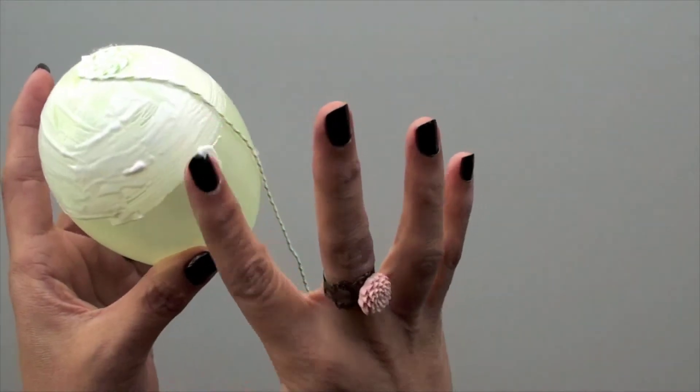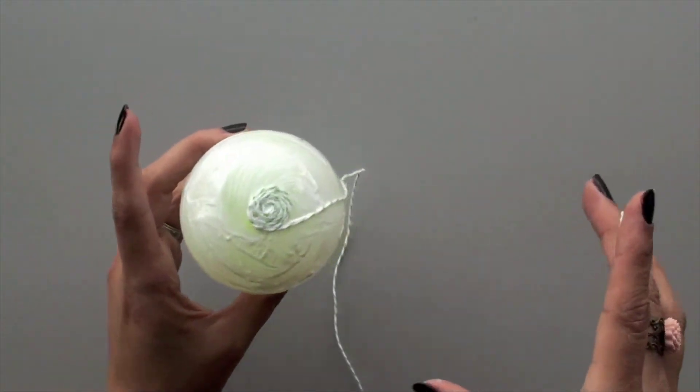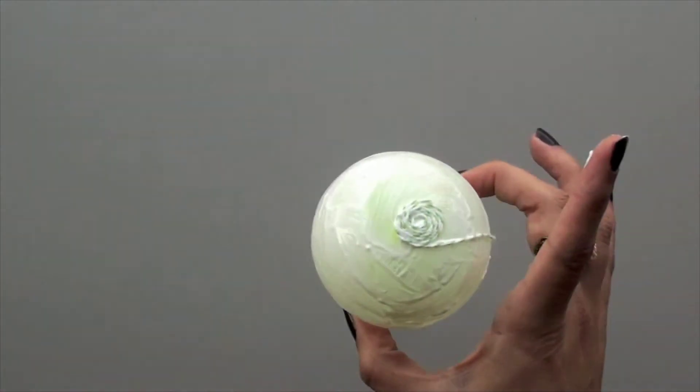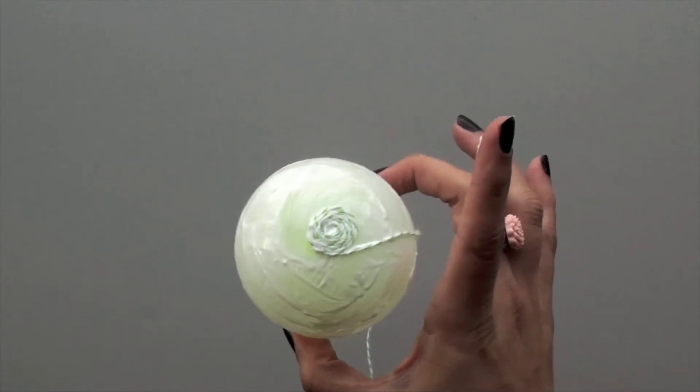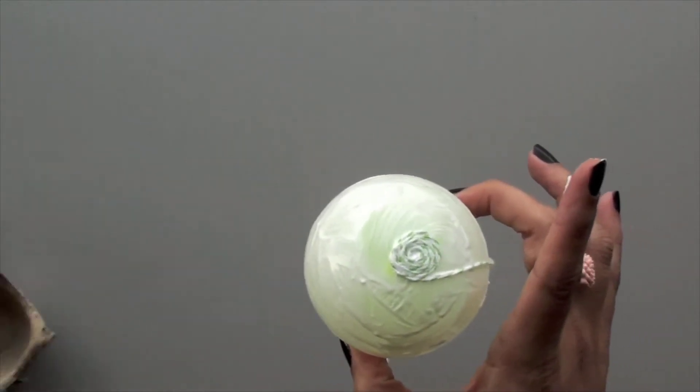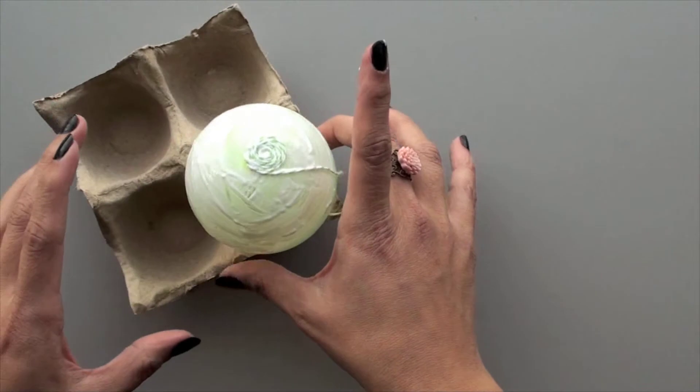So again, excess glue like I said—you'd rather have that than not enough. And the other thing I would say is to have some kind of holder. I found these egg cartons that I'm actually using to put the treat holders on as well.